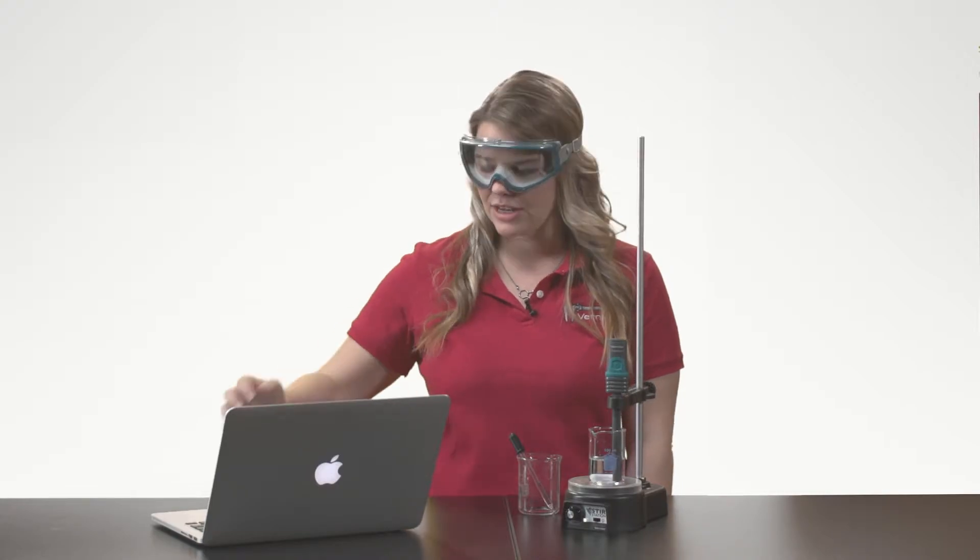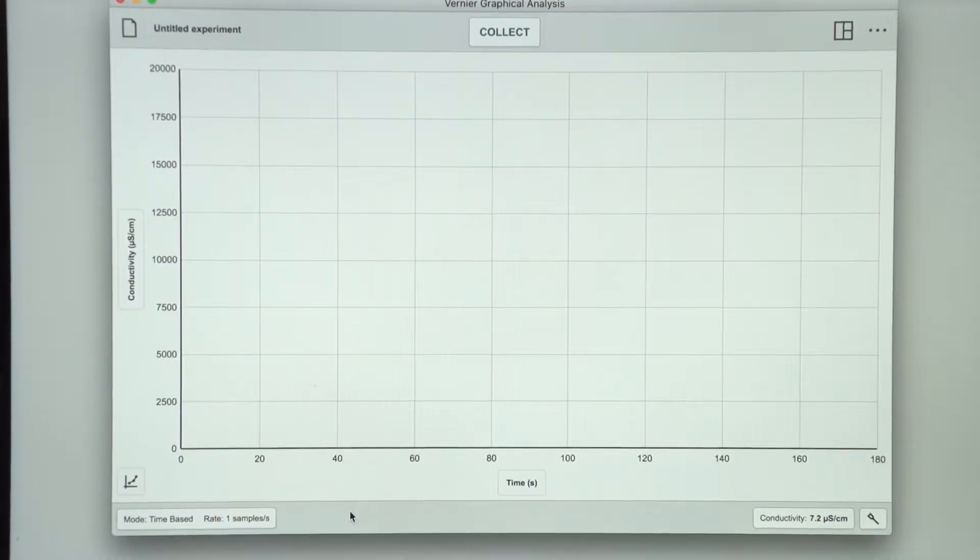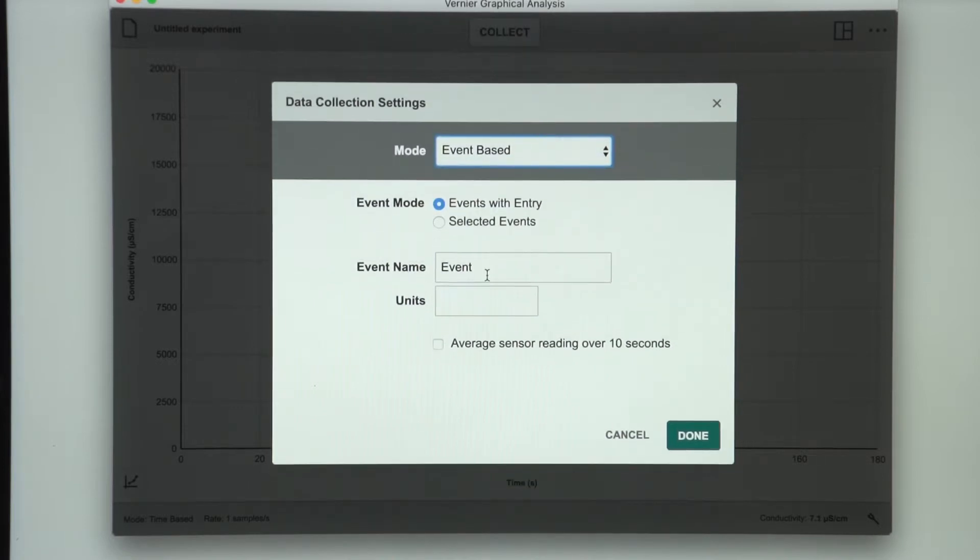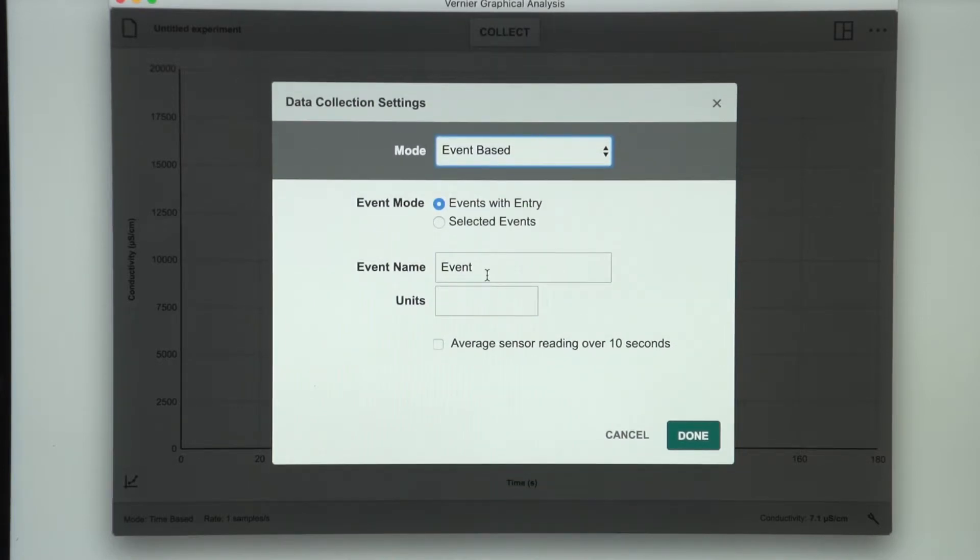To set up my data collection, I will tap on the Mode button, and then from the Mode dropdown menu, select Event Based. Events with Entry is selected by default. I will rename the Event Volume and put the units in Drops, then press Done.